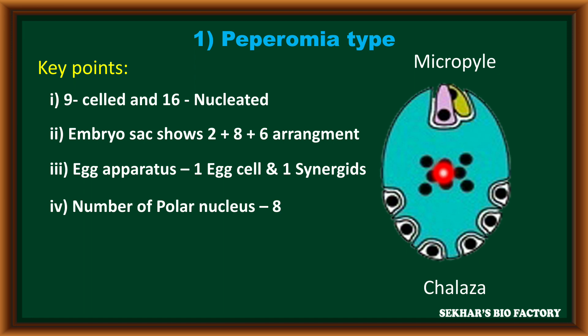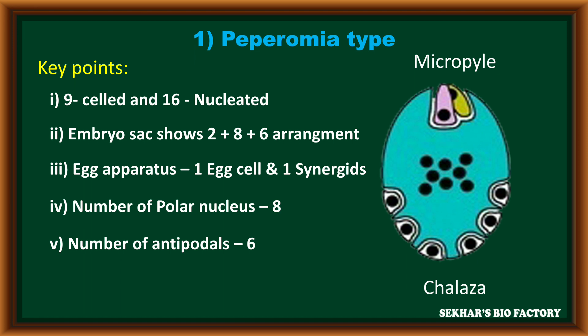In the central cell, a total of eight polar nuclei are present. Towards the chalazal end, six antipodal cells are present in the structure of the Peperomia type of embryo sac. That is the first type.